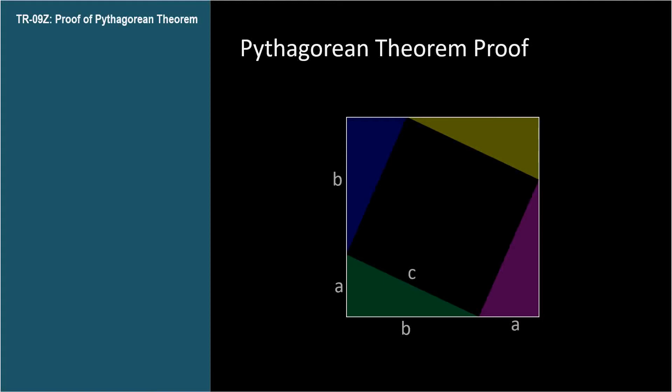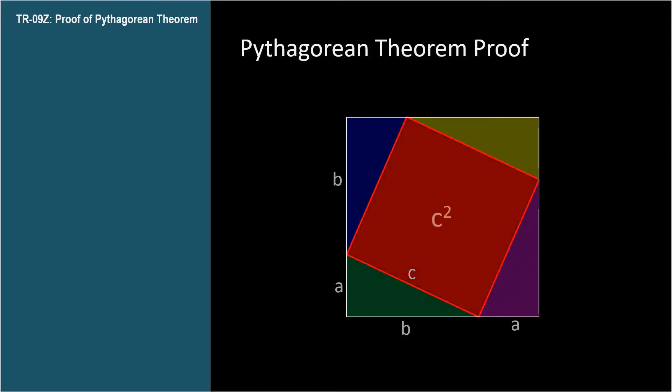Since the hypotenuse has length C, this tilted square in the middle must have an area of C squared. So we can say in symbolic fashion, big square minus four triangles equals C squared.